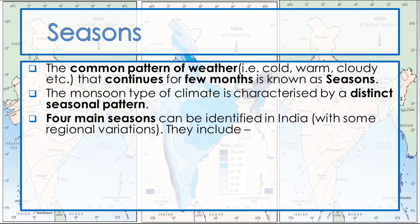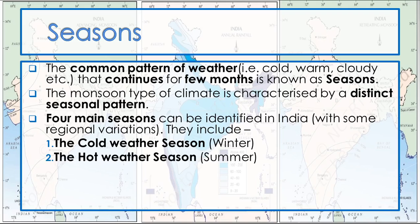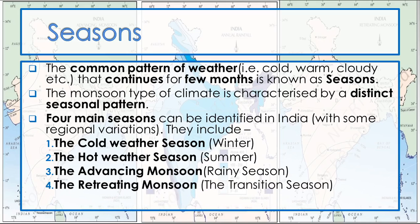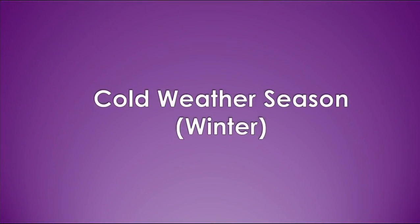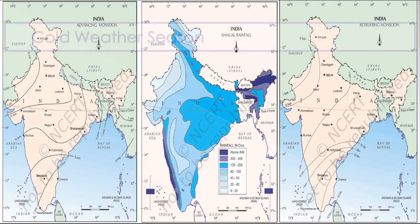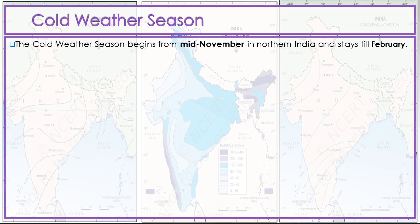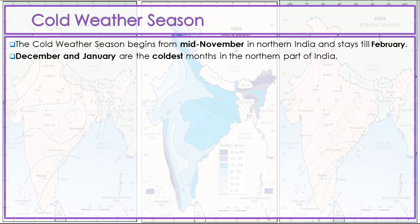They include the cold weather season, the hot weather season, the advancing monsoon, and the retreating monsoon. Cold weather season, also known as winter, begins from mid-November in northern India and lasts till February. December and January are the coldest months in the northern part of India.